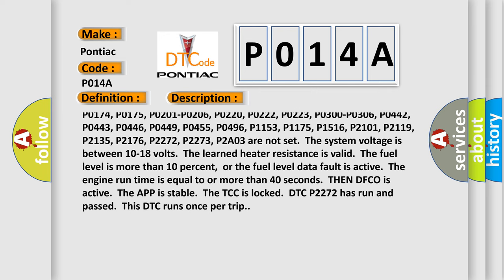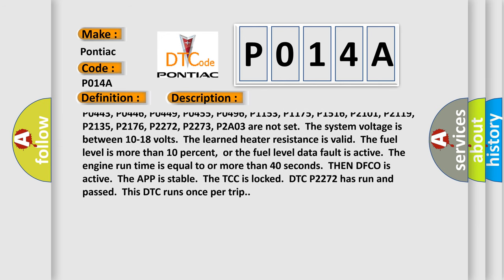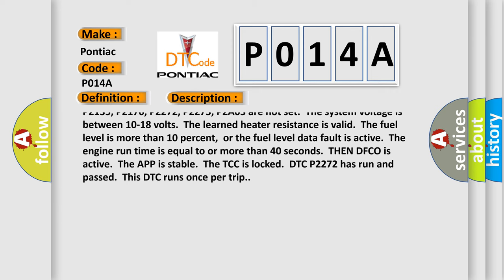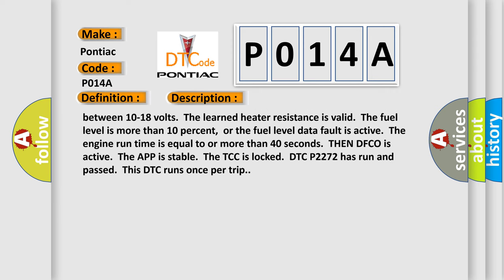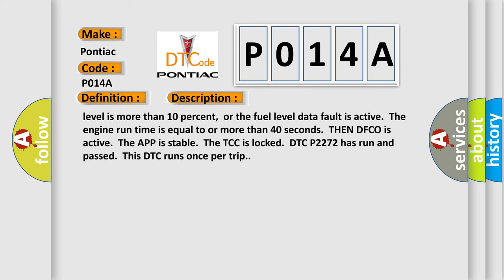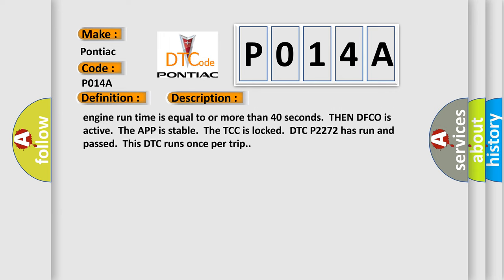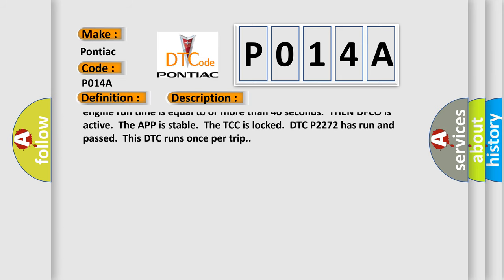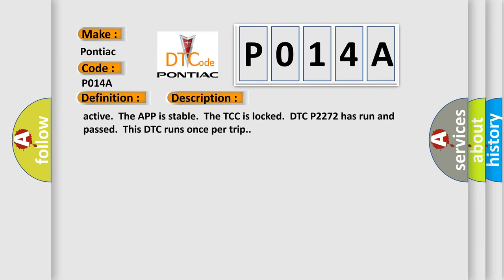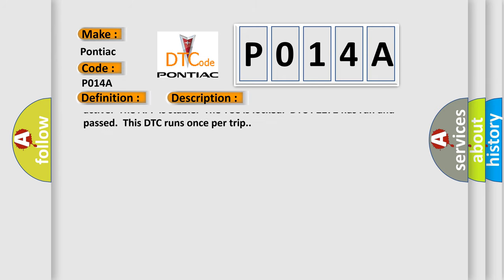Additional related DTCs include: P0160, P0161, P0174, P0175, P0201, P0206, P0220, P0222, P0223, P0300, P0306, P0442, P0443, P0446, P0449, P0455, P0496, P1153, P1175, P1516, P2101, P2119, P2135, P2176, P2272, P2273, and P2A03.